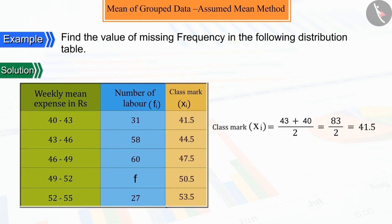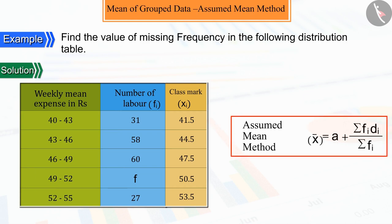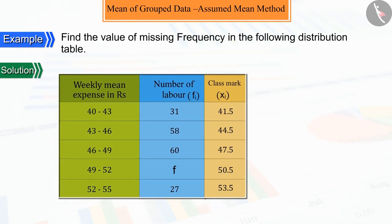As you know, to make the calculation easier, we choose the assumed mean method. On that basis, we need an assumed mean here, which we choose from XI.